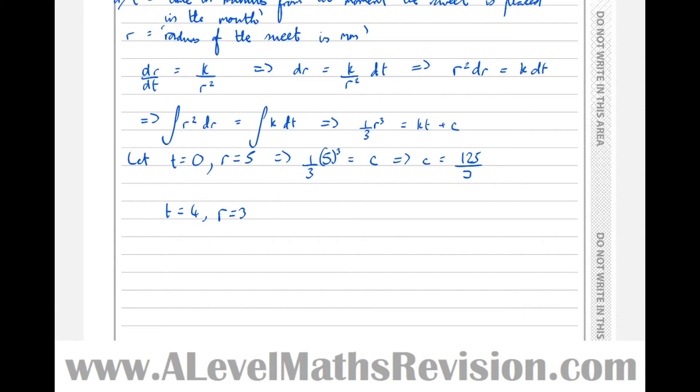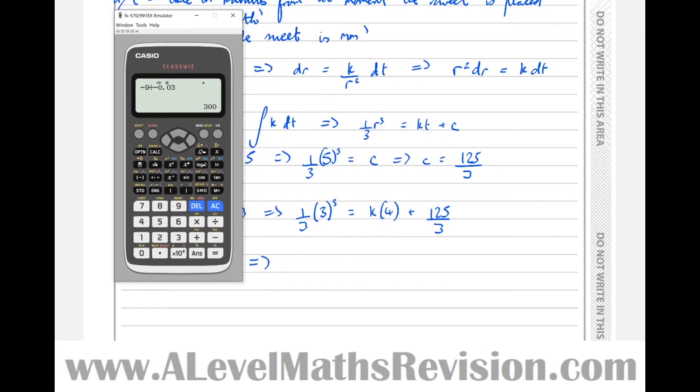So t equals 4, r equals 3, which means that a third of 3 cubed equals kt, so k4 plus c, which was 125 over 3. So that means, and I will get the calculator out now, I don't want to be doing more difficult arithmetic like that in an exam. So a third of 3 cubed, suspect it's 9, but you can never be too careful when the exam pressure gets to you. It's important that you've got all the tools at your disposal and you're using them properly.